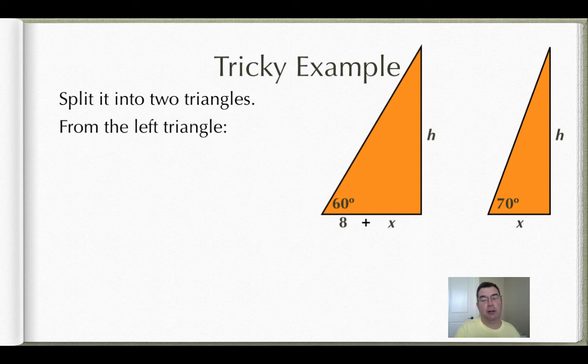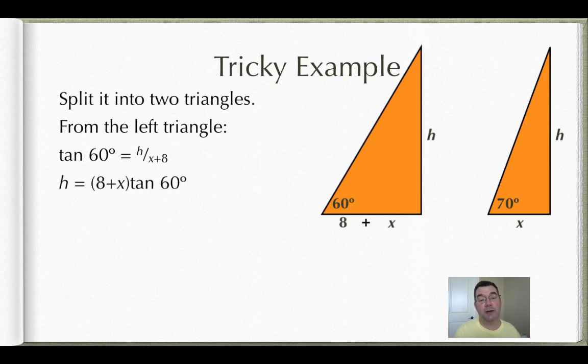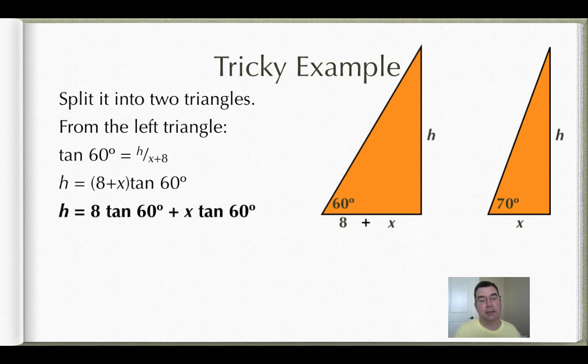Looking at the left triangle, I've got the opposite and the adjacent again, so that's the tangent. The tangent of 60 degrees is going to equal my opposite h over my adjacent x plus 8. So if I cross multiply, that's what I get, 8 plus x times the tangent of 60. So that's 8 times the tangent of 60 plus x times the tangent of 60 if I distribute, use the distributive property on the right-hand side.